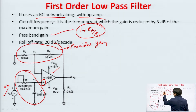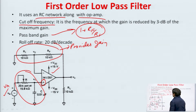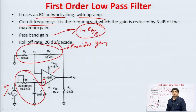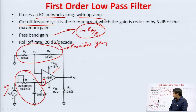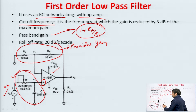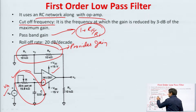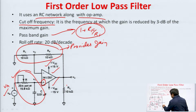The pass band gain is 1 plus Rf upon R1. The cutoff frequency of the filter is the frequency at which the gain is reduced by 3 dB of the maximum gain. I had discussed this cutoff frequency in the last class also. Since it is a first order filter, the roll-off rate is 20 dB per decade. The RC section is applied at the non-inverting configuration to avoid the loading problem. R1 and Rf provide gain. The supply voltages are +Vcc and -Vee, RL is the load resistance, V_out is the output voltage and V_in is the input.